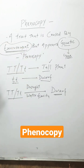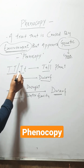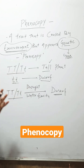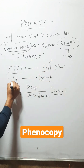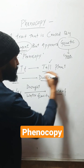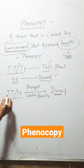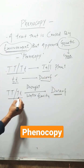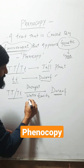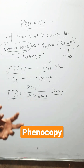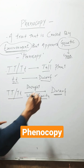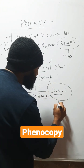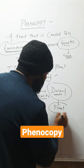Let's understand phenocopy with this example. We know that seeds with genotype TT or Tt will form a tall plant, and seeds with genotype tt will form a dwarf plant. But when seeds of genotype TT or Tt are grown under water scarcity — when water is not plentiful — they will grow into a dwarf plant due to water scarcity.